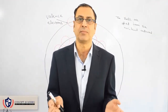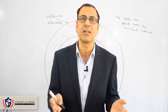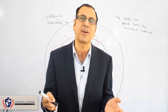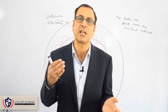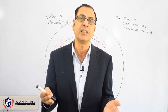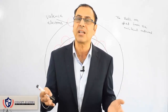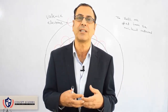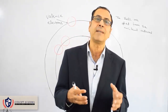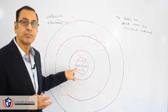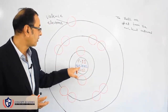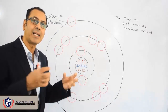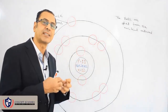Arrangement of particles in the atom. There are three particles: protons, neutrons, and electrons. We have discussed the method to find the number of protons, neutrons, and electrons in the atom. Now we are discussing their arrangement. In the center of the atom, which we call the nucleus, there are protons and neutrons held tightly packed together.